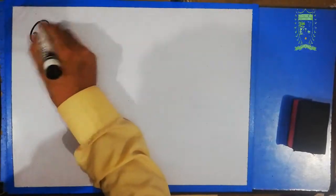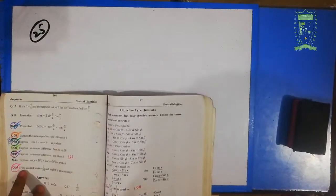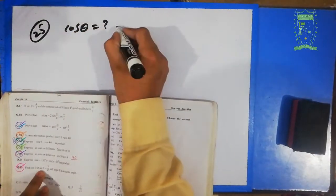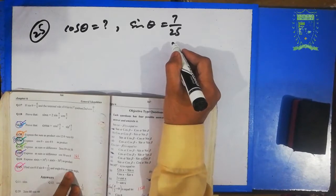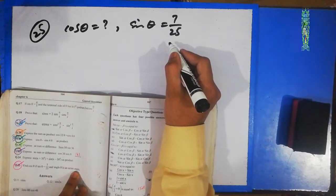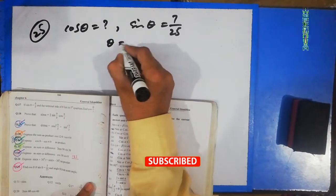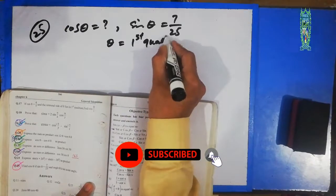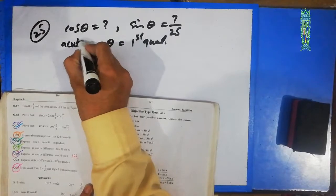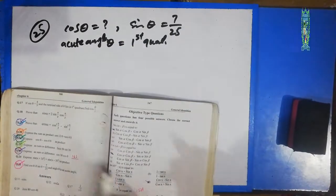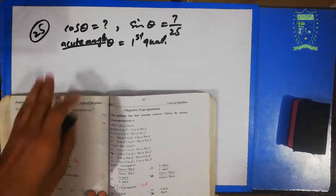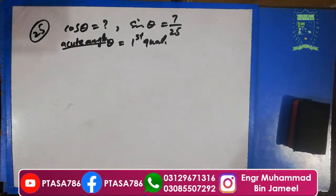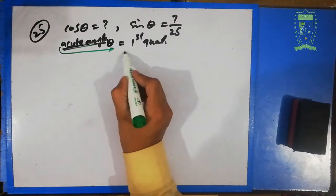Question number twenty-five, the last short question in this chapter: find cosθ given sinθ = 7/25 and θ is an acute angle. Since the angle is acute — less than 90 degrees — θ lies in the first quadrant.